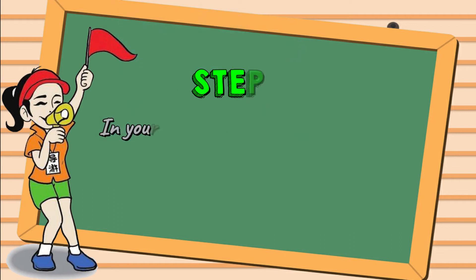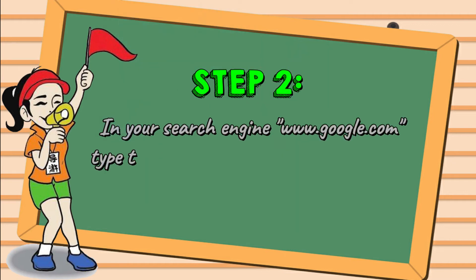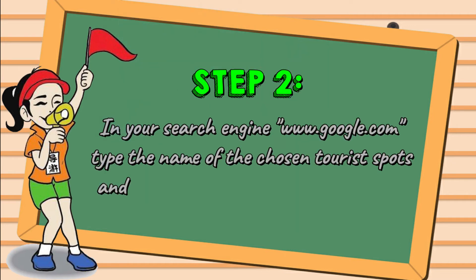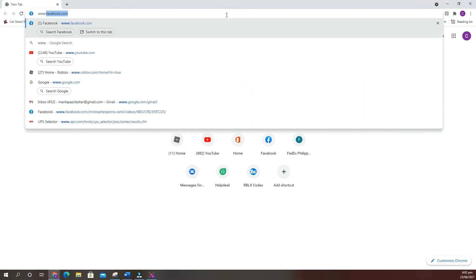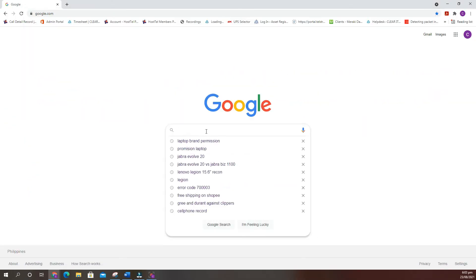Step 2: In your search engine www.google.com, type the name of the chosen tourist spots and collect and save at least five pictures for each tourist spot. For example: White Beach, Boracay.